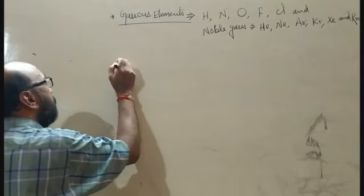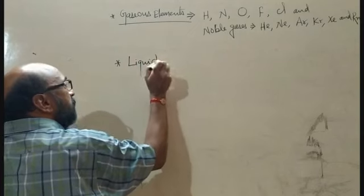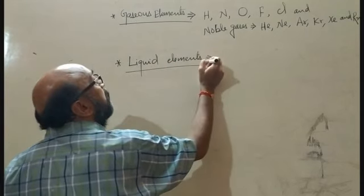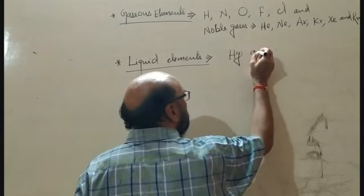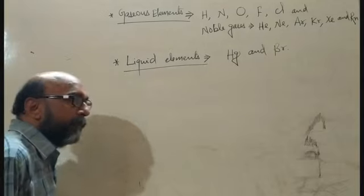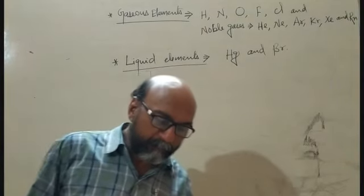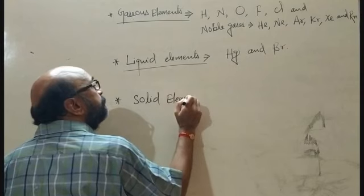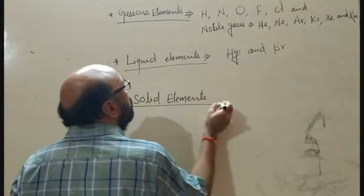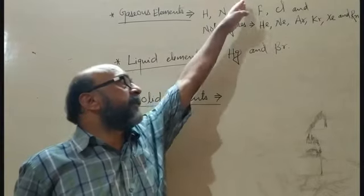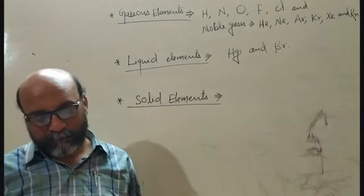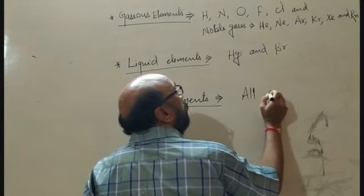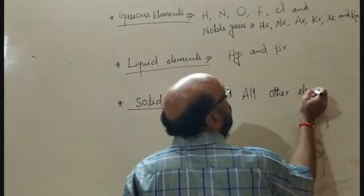There are two elements known to us which are found in liquid state at room temperature: mercury and bromine. The third category is solid elements. Other than these 13 elements (11 gaseous + 2 liquid), all remaining elements are solid.